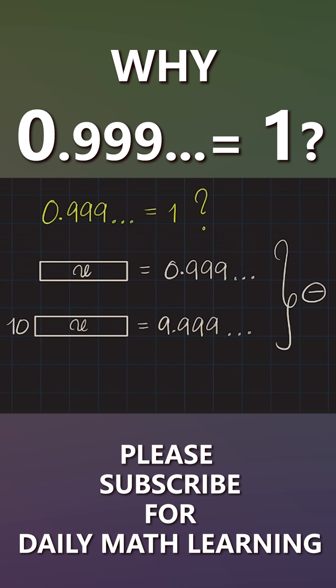Upon subtracting, I have 10 unknowns minus 1 unknown, which is 9 unknowns or 9x. So all I'm saying is the difference here will be 9x.